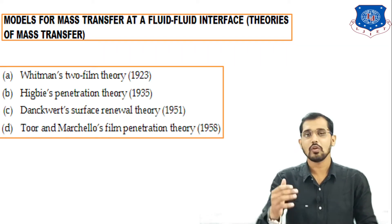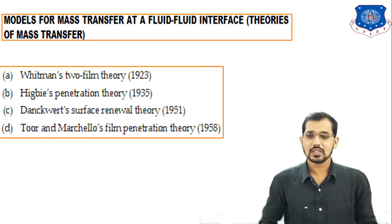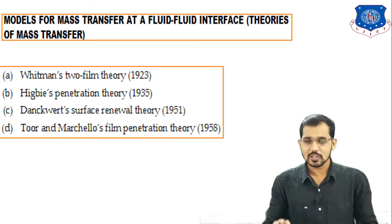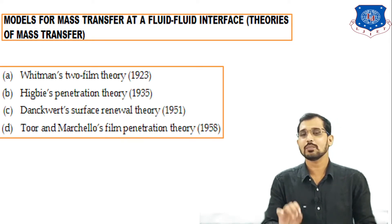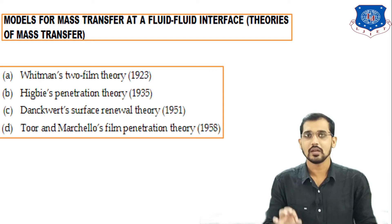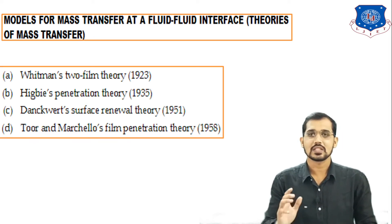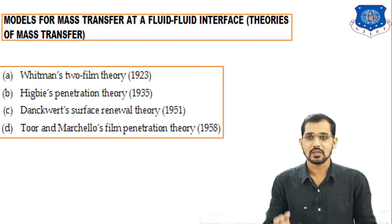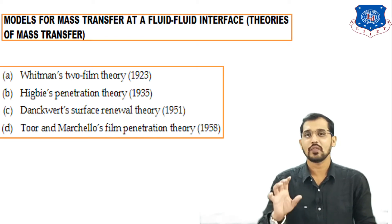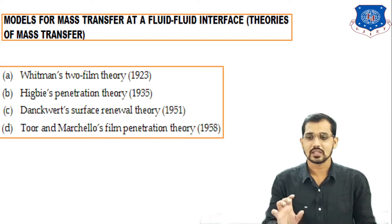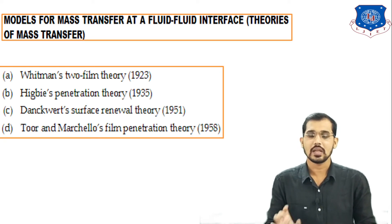I am going to discuss all four theories. First theory is two film theory, introduced by Whitman in 1923. Second theory is penetration theory, introduced by Higbee in 1935. Next is surface renewal theory, given by Dankworth in 1951. Last theory is film penetration theory — a combination of film theory and penetration theory — given by Tour and Martial Oates in 1958.